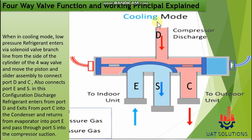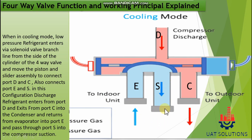In this configuration, discharge refrigerant enters from port D and exits from port C into the condenser, and returns from the evaporator into port E and passes through port S into the compressor suction.